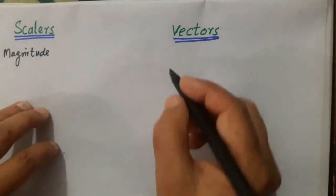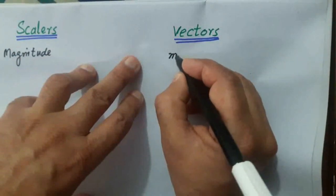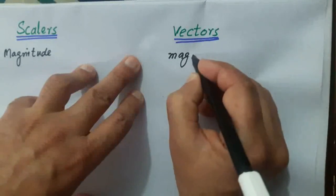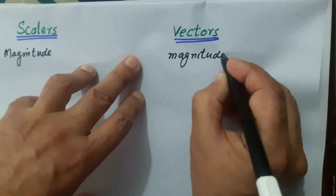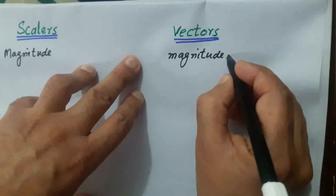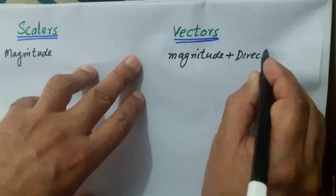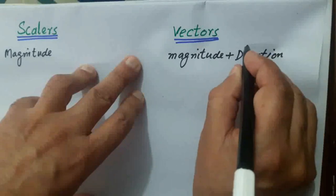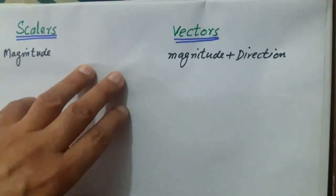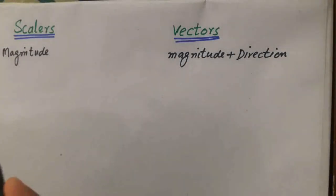Vectors are quantities which possess magnitude as well as direction. Scalars have only magnitude, while vectors also require direction.